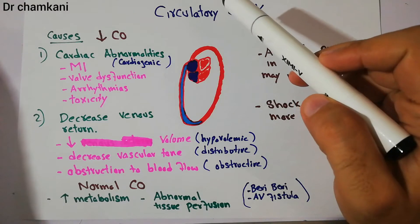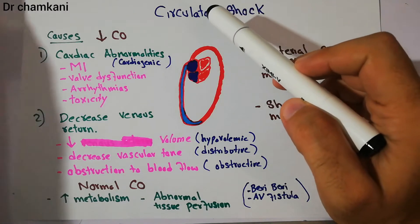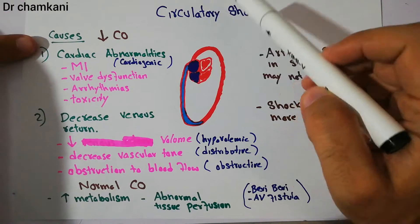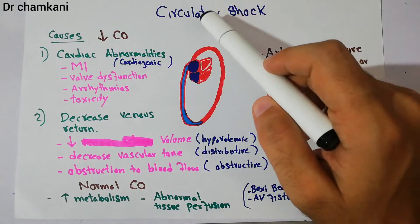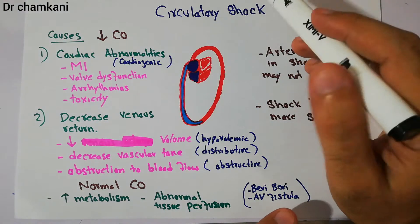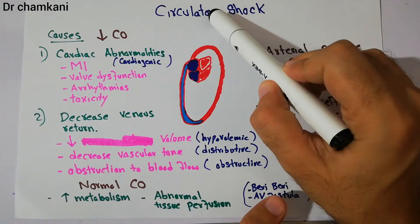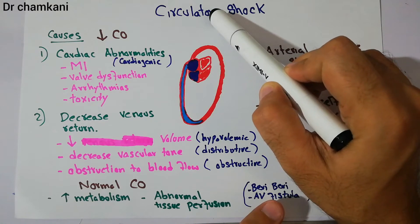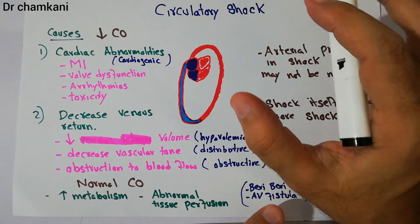Today we are going to start a new chapter about circulatory shock and its treatment. The first thing we are going to discuss is what is basically circulatory shock and what are its different types. Circulatory shock is the inadequate blood flow through the body to the extent that the body tissues are damaged because of too little blood flow.